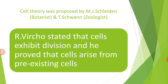Cell theory was proposed by Schleiden, who happens to be a botanist, and Schwann, who happens to be a zoologist. Schleiden worked on plant cells, whereas Schwann worked on animal cells. Both contributed to the cytology branch and all the theories formulated by Schleiden and Schwann are known as cell theory, collectively proposed by them.